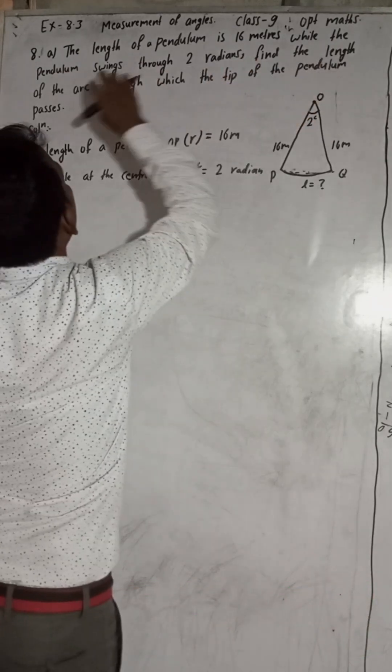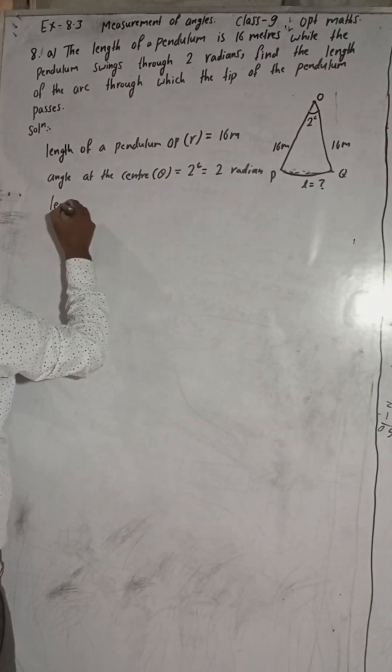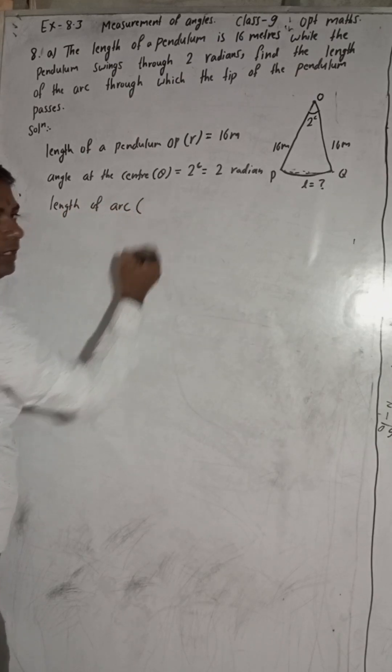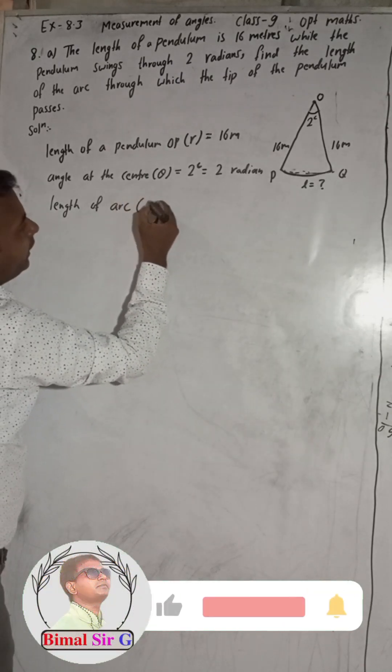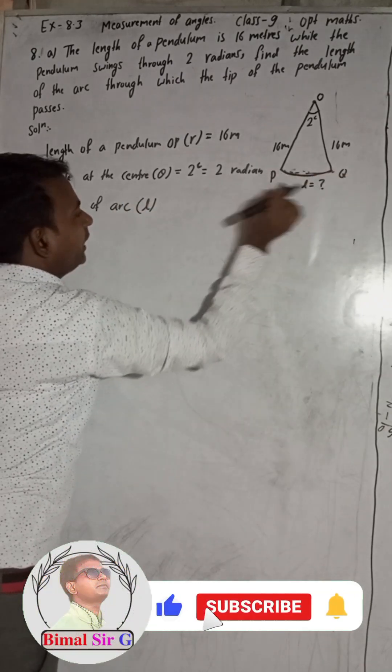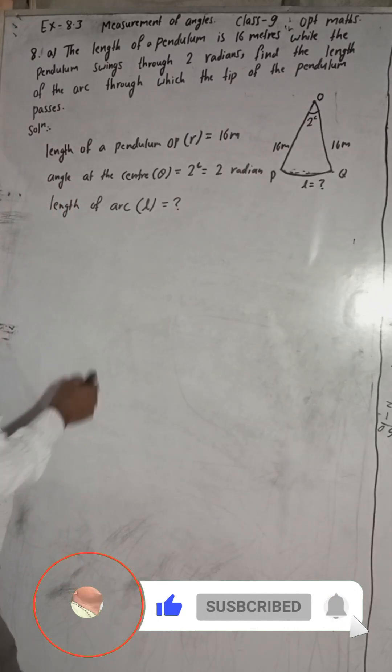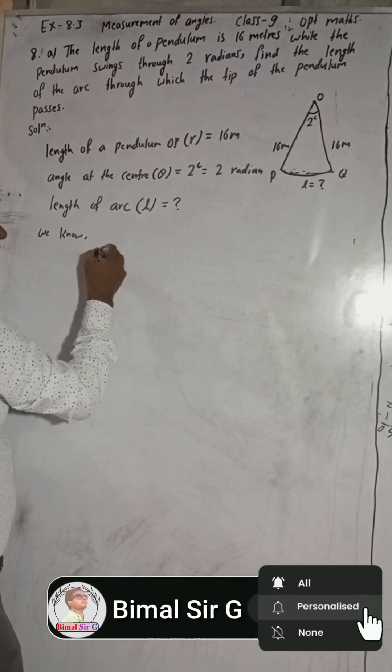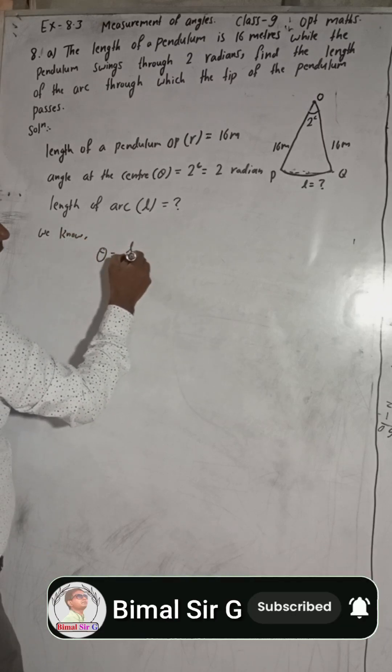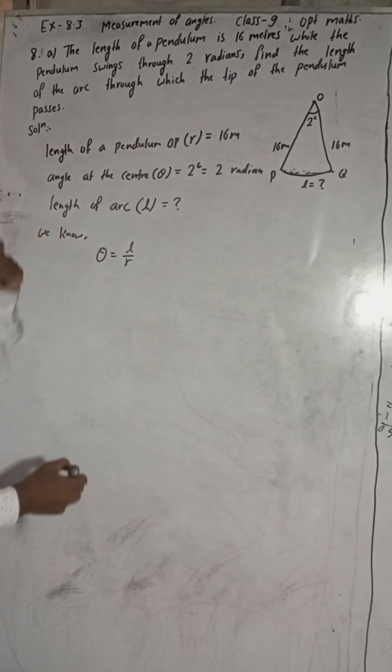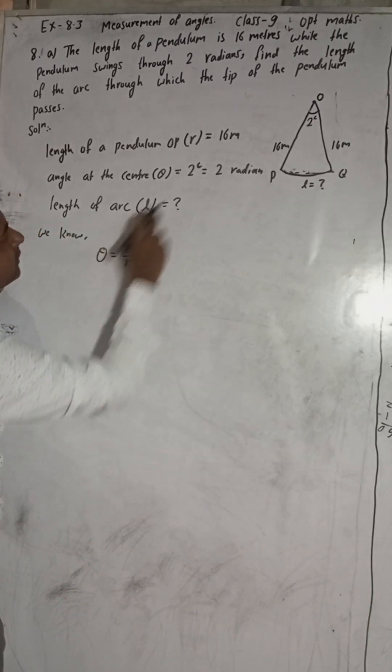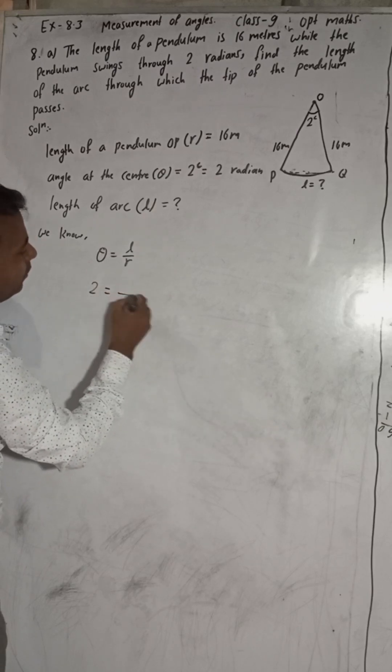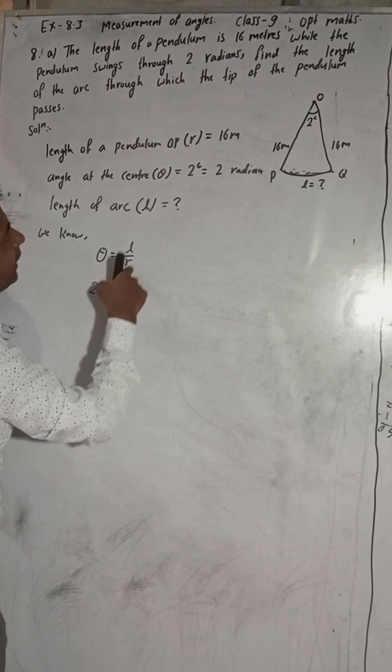Now find the length of the arc. So length of the arc means length of the arc. Length of the arc is denoted by L. So L is equal to, we know formula: theta is equal to L by R. This is our formula. So here theta is equal to how much? 2 radians. R means how much? R is 16.